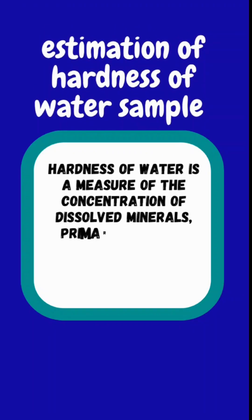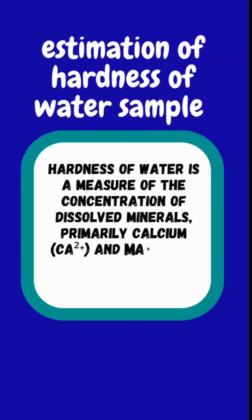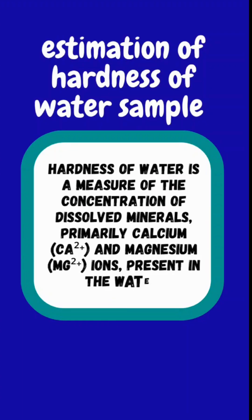Hardness of water is the measure of concentration of dissolved minerals like calcium and magnesium present in the water. These minerals usually originate from the dissolution of limestones, chalk and other mineral deposits as the water passes through the soil as well as rock.